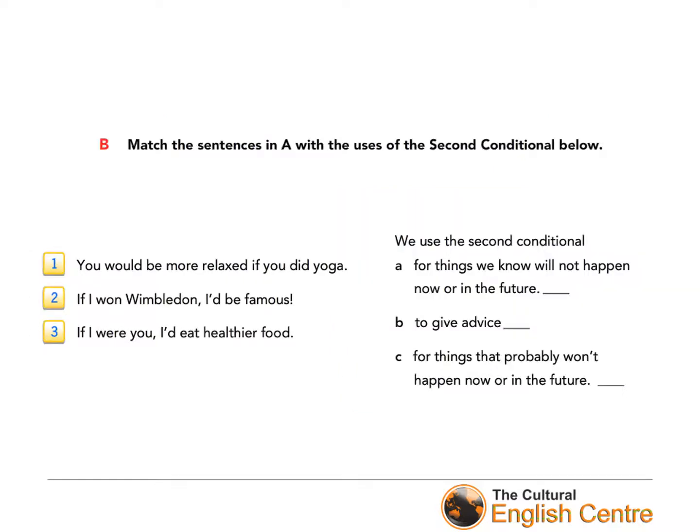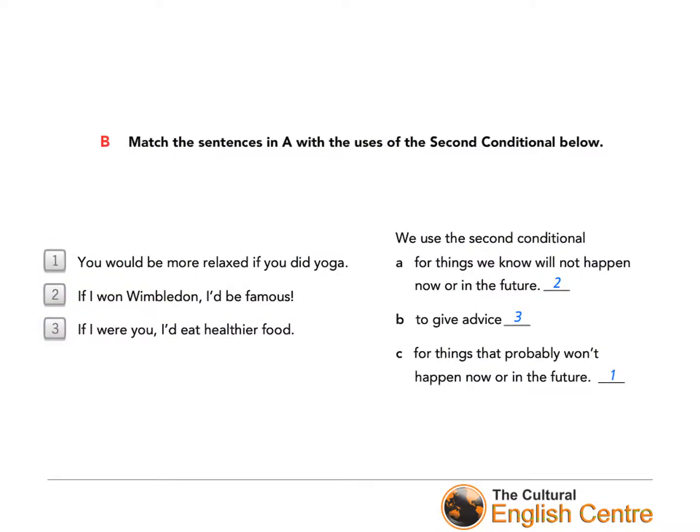Now please match the sentences from exercise A with their uses in exercise B. We use the second conditional for things we know will not happen now or in the future, which is shown in example two; to give advice, shown in sentence three; and for things that probably won't happen now or in the future, just like in exercise one.